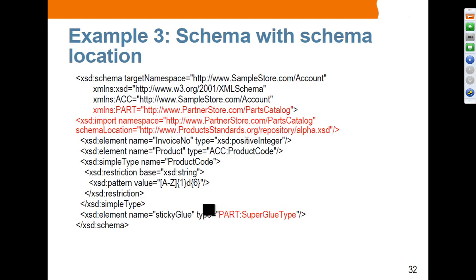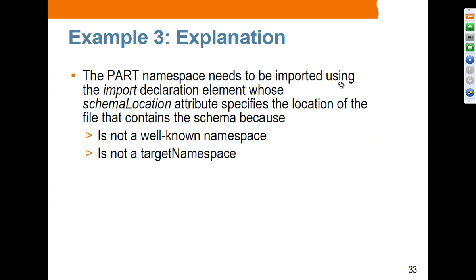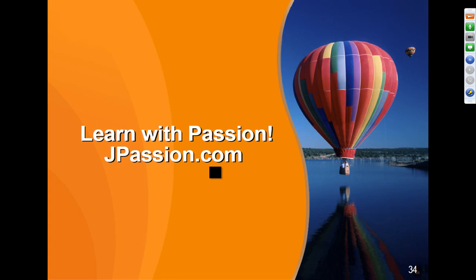However, suppose you are using another namespace — in this case, a custom namespace called partnerstore.com parts catalog. You define the source namespace, but this is not a well-known namespace, so you have to actually provide a schema file using the schema location. The part namespace needs to be imported using an import declaration element whose schema location attribute specifies the location of the file containing the schema, because it is not a well-known namespace like XML schema and it is not the target namespace.